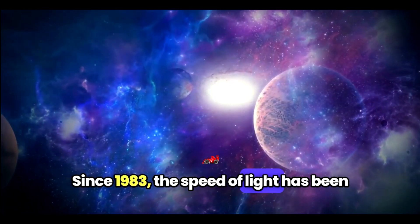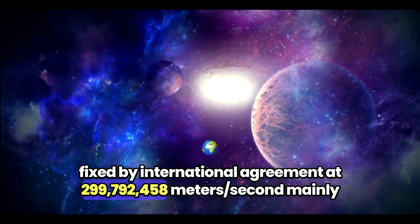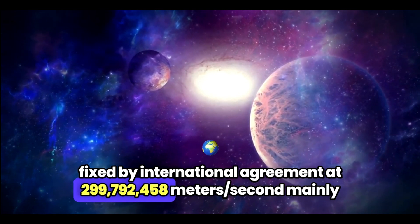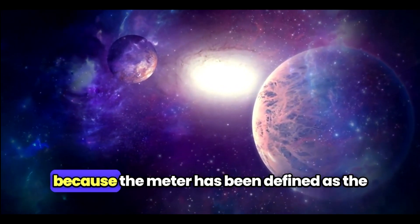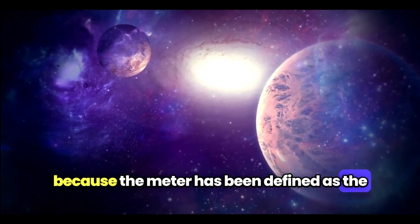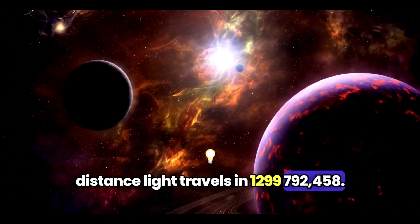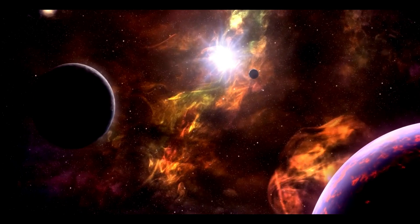the speed of light has been fixed by international agreement at 299,792,458 meters per second. Mainly because the meter has been defined as the distance light travels in 1/299,792,458 seconds.